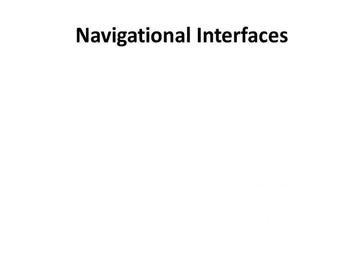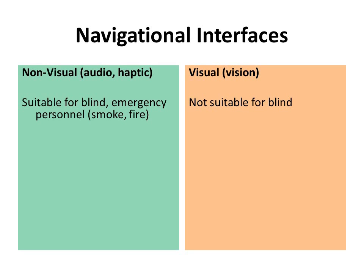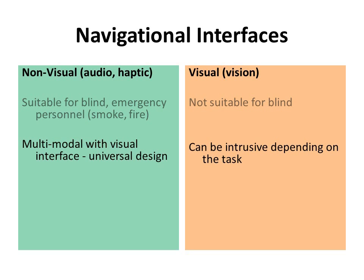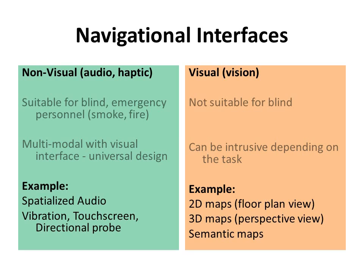The next topic is navigational interfaces. The main two categories are non-visual and visual. Vision-based interfaces are not suitable for blind users — they require audio or haptic-based interfaces for indoor navigation. Non-visual interfaces are also required by emergency personnel during situations like smoke or fire. Visual interfaces can sometimes become intrusive depending on the task and place. Non-visual interfaces, when coupled with visual interfaces, become a universal interface design suitable for all people, and it becomes a multimodal interface. Some examples of non-visual interfaces are specialized audio, vibration, touch screen, and directional probes. Examples of visual interfaces are 2D maps, 3D maps, and semantic maps.